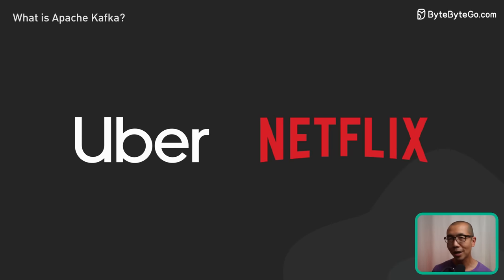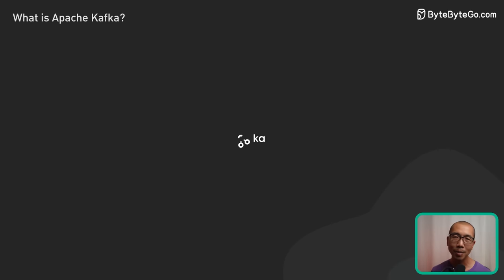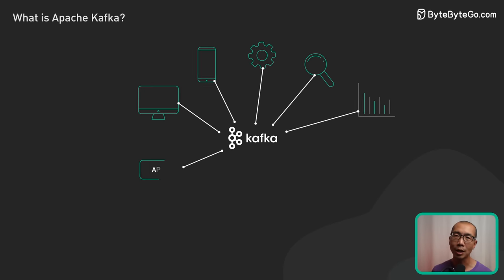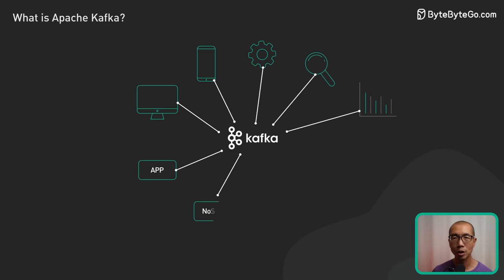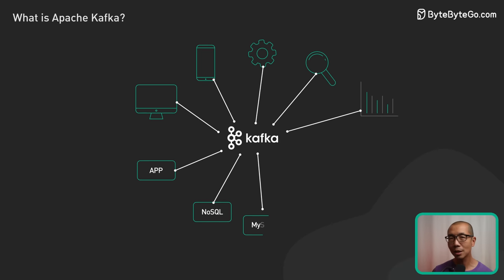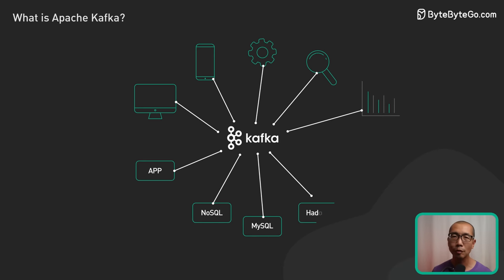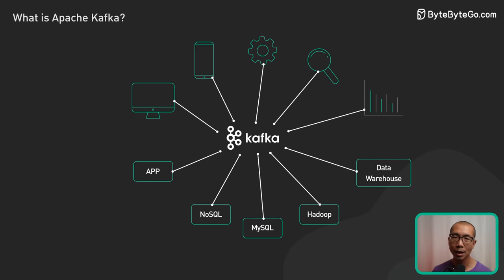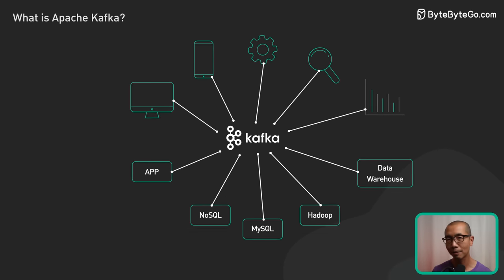For gathering data from many sources, Kafka can consolidate disparate streams into unified real-time pipelines for analytics and storage. This is extremely useful for aggregating Internet of Things and sensor data.